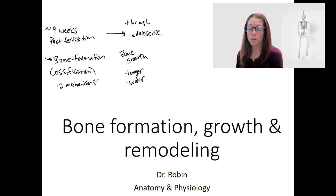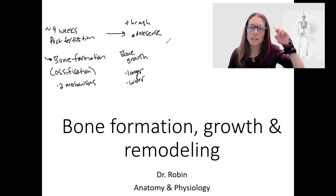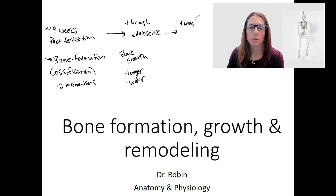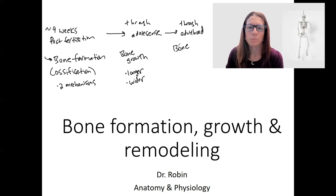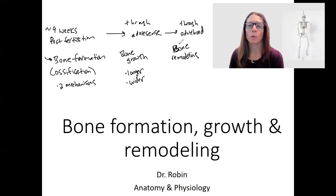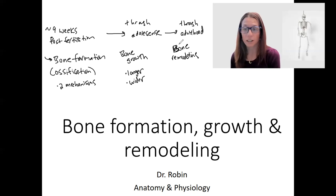Now you are a full-grown human, but your bones aren't done yet. In addition to healing that can occur — bones can heal if they're fractured or injured — there's also through adulthood remodeling. Fracture repair would be a type of remodeling. Bone remodeling means your bones can be altered based on their use. If you go into space, are bedridden, change activities, or start exercising a lot with different weight-bearing activities, your bones change shape — that's bone remodeling.